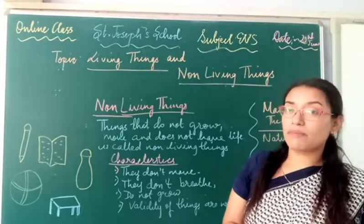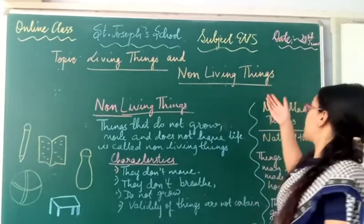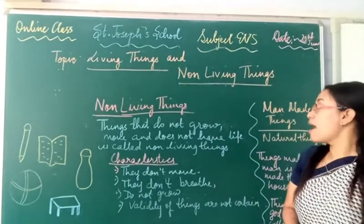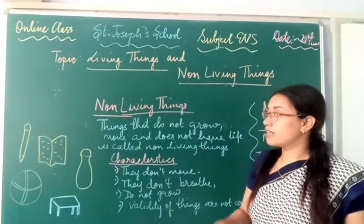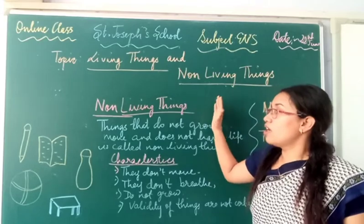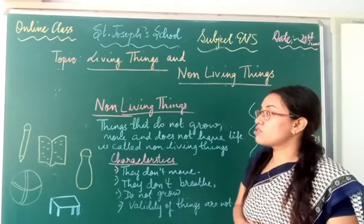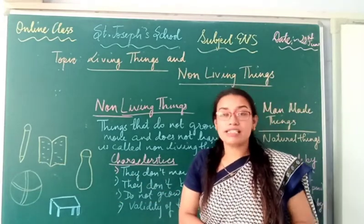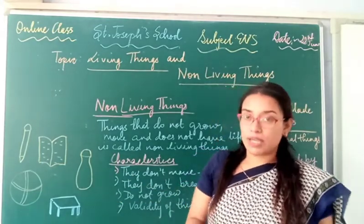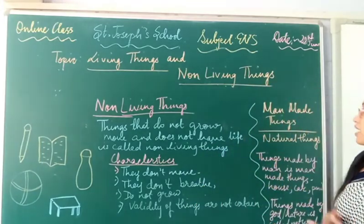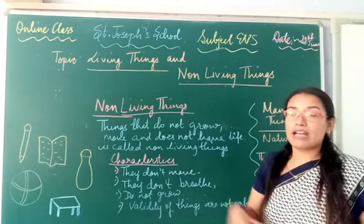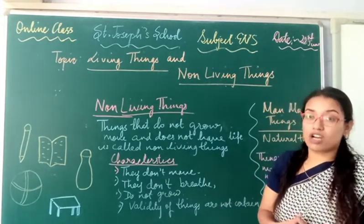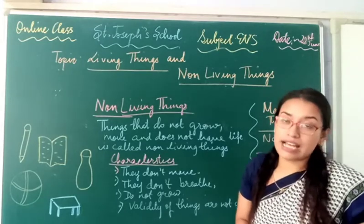Now, coming back to our next topic — man-made things and natural things. What are man-made things? Man-made things are things that are made by man, and they can be categorized as non-living things. For example, non-living things include chair, table, pencil, and books — things that do not move. Things that we make are non-living things. Man-made things include your house, your electric fan, or electricity — things that have been constructed by man.